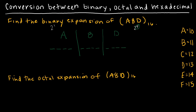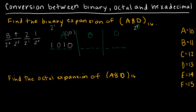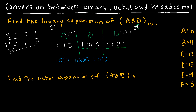Because we're dealing with 4 values, the places are 2 to the 3rd (8), 2 to the 2nd (4), 2 to the 1st (2), and 2 to the 0 (1). For A (which is 10): 8 plus 2 gives 10, so I need one 8 and one 2. For 8: I just need one 8. For D (which is 13): 8 plus 4 is 12, plus 1 is 13, so that's 1, 1, 0, 1. That's all you have to do to go from hexadecimal to binary, and that is base 2.